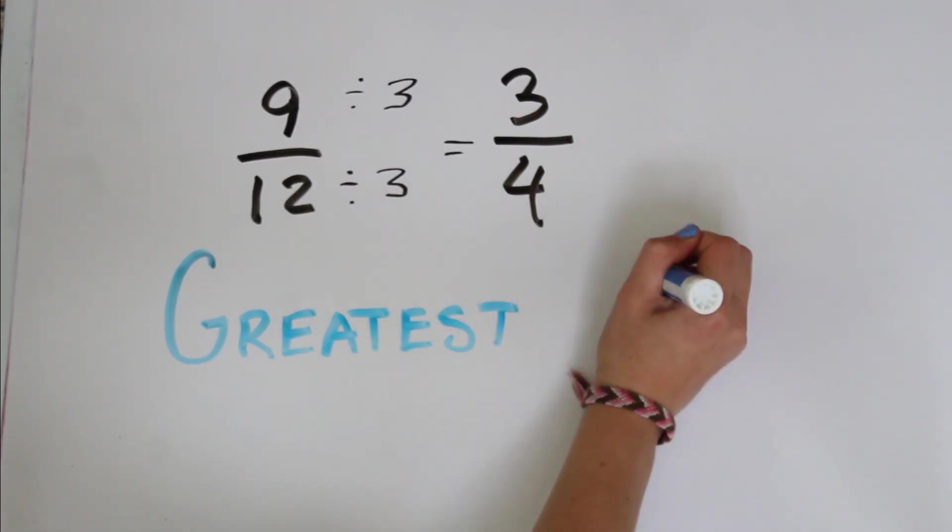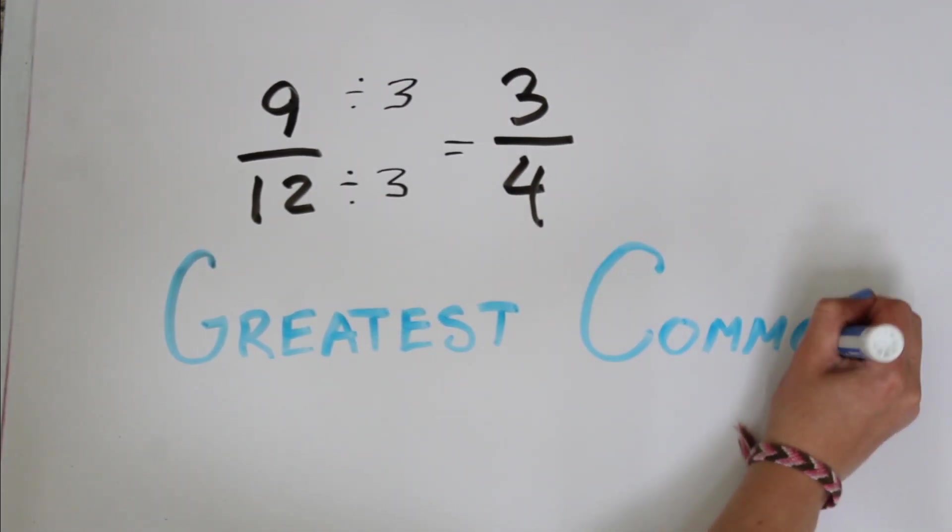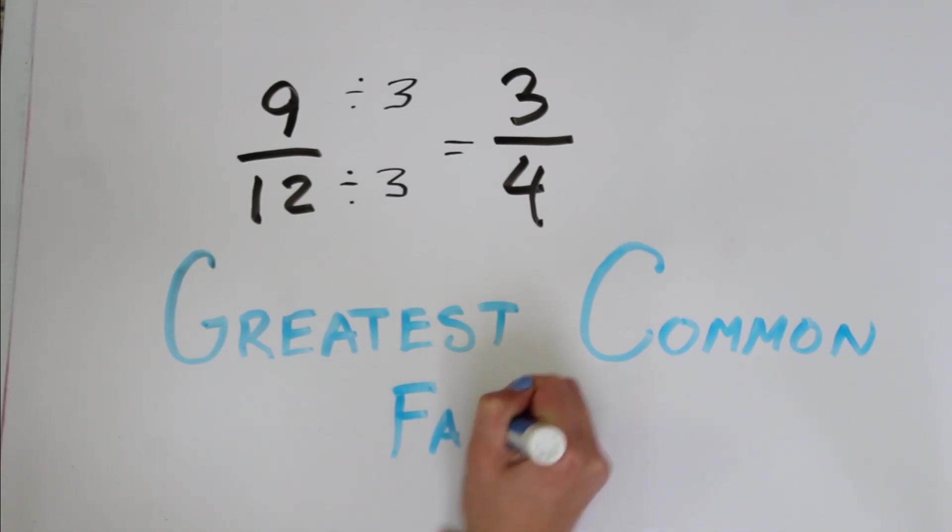Well you may recall that this is called finding the greatest common factor. This is central to the Euclidean algorithm, and we're also going to be referring to it as the greatest common divisor instead. So just a little change in terminology.